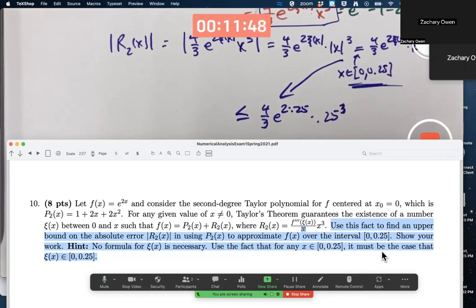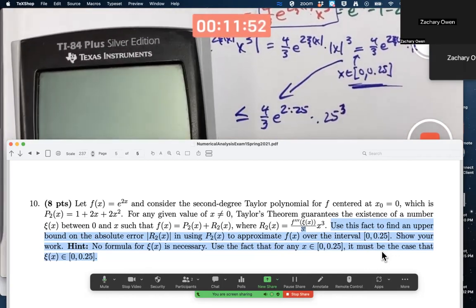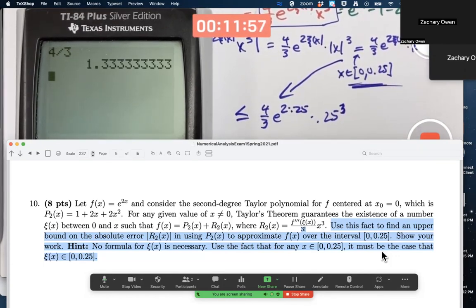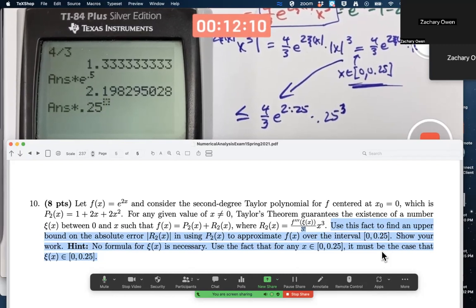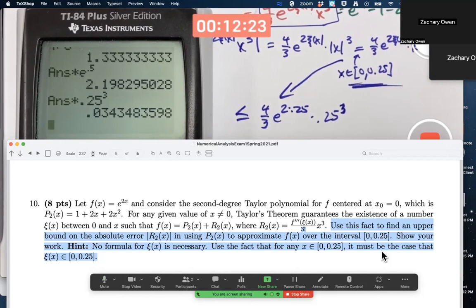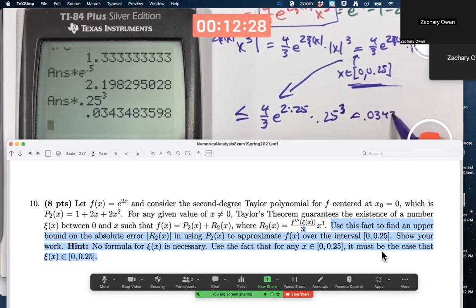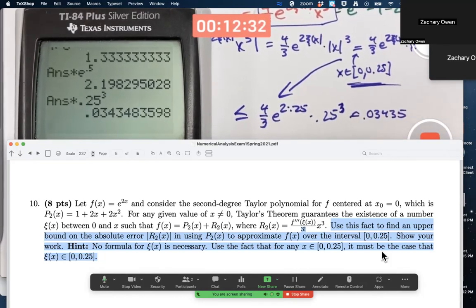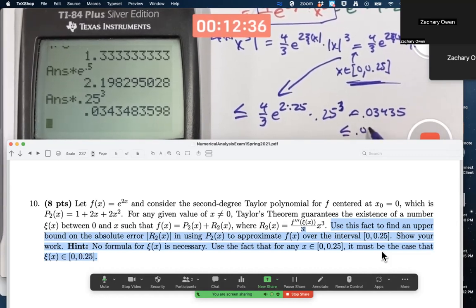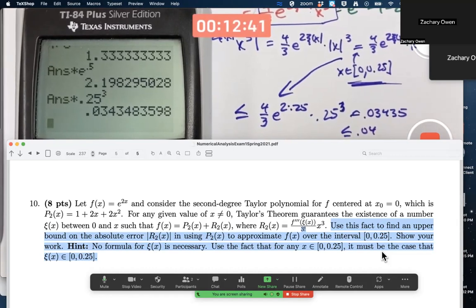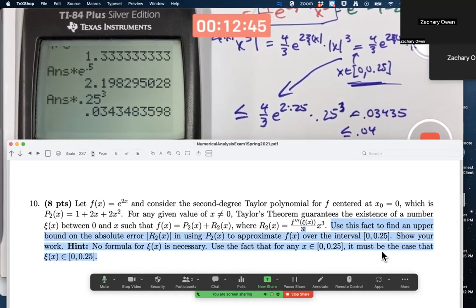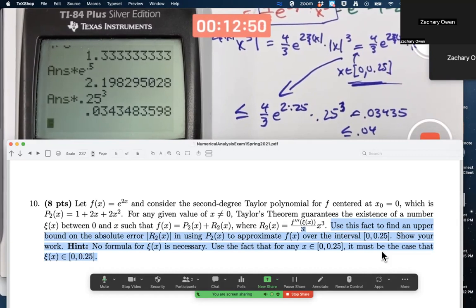Whatever that happens to be, that's going to be a guaranteed upper bound on this error. It's an absolute error. Let's go ahead and figure out what that is. 4 divided by 3, 1.3 repeating. 2 times 0.25 is 0.5, so we multiply times e to the 0.5 here. And then multiply times 0.25 to the 3rd power, which is going to be 1 over 64 as a fraction, right? As a decimal, it would be 0.01 something. This is about 0.03435 if I want to go far enough to round up is what I was doing there. But we could certainly say that's also less than or equal to 0.04. This is saying over the interval from 0 to 0.25, the absolute error in using the second-degree Taylor polynomial to approximate f over that interval is less than 0.04.